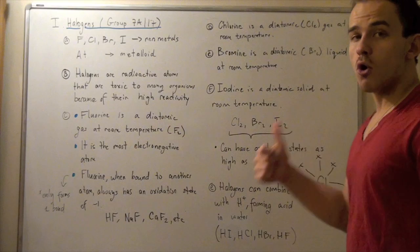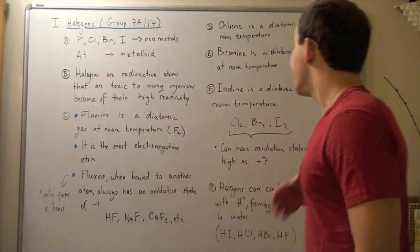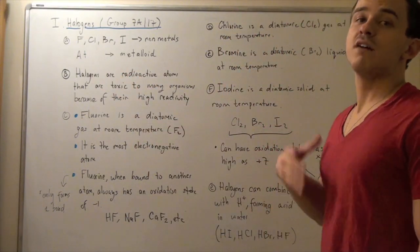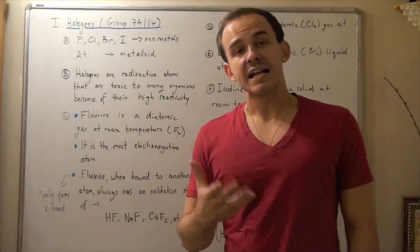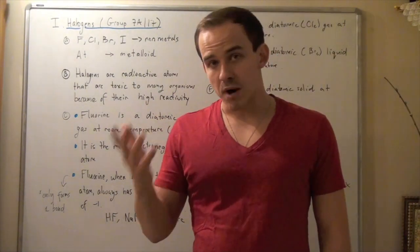These three guys, chlorine, bromine, and iodine, unlike fluorine, can have an oxidation state of up to plus seven, and that means they can all form up to seven bonds.